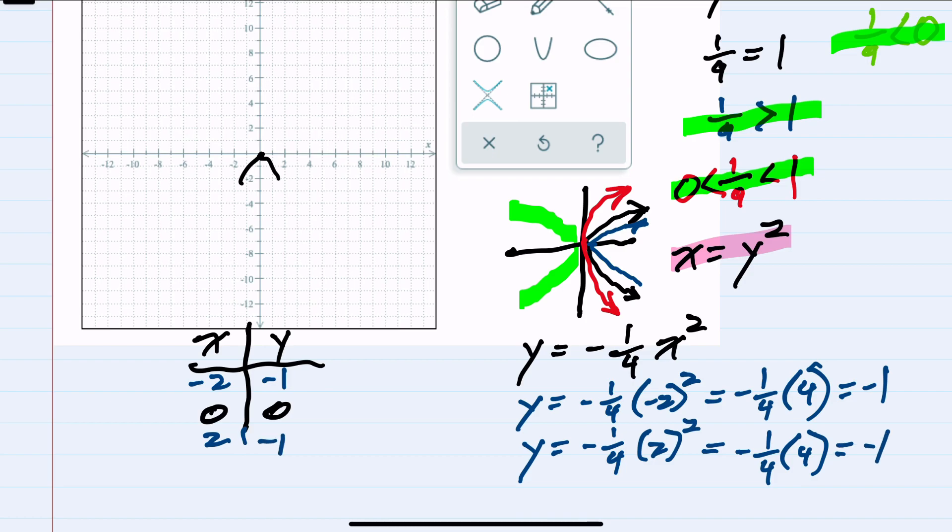Now that I have these three points, I can see that when x is negative 2, my y coordinate is negative 1. And when x equals positive 2, my y coordinate is again negative 1. So this is a wide parabola opening down because 1 over a is negative, and it's wider than the standard parabola because of that fraction, 1 fourth.